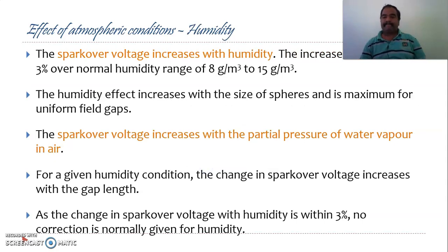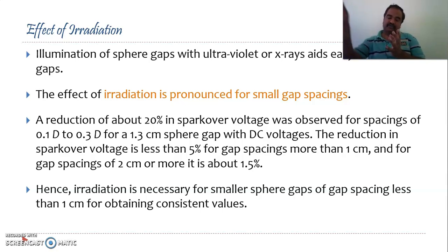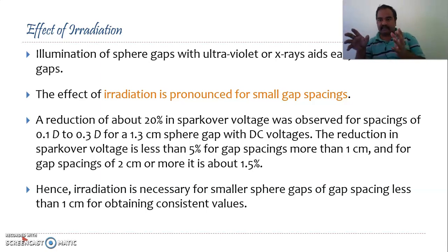The humidity factor alpha: it has been observed that spark-over voltage increases with humidity. Whenever the partial pressure of water vapor increases, the spark-over voltage also increases. The other factor is irradiation. As seen in ionization chambers, a radiation source creates electrons. So if small gap spacings are used and any radiation is present near them, it will aid ionization and ignite your gap. The first point says illumination of sphere gaps with UV or X-rays aids easy ionization in gaps. Make sure there are no sources of radiation near your measuring chambers.